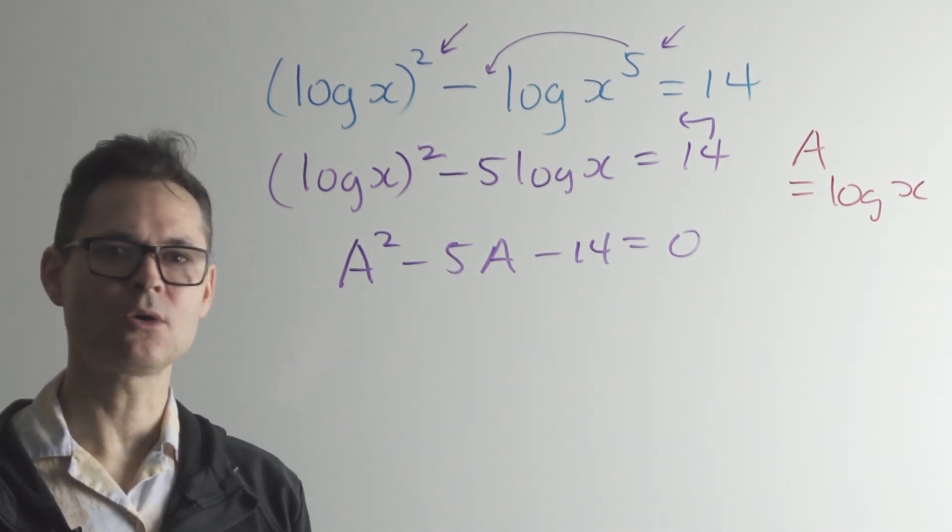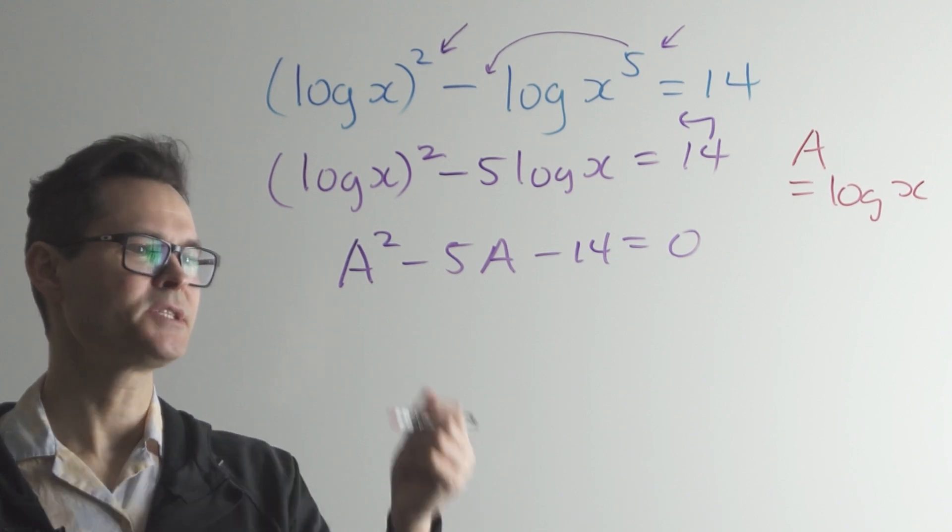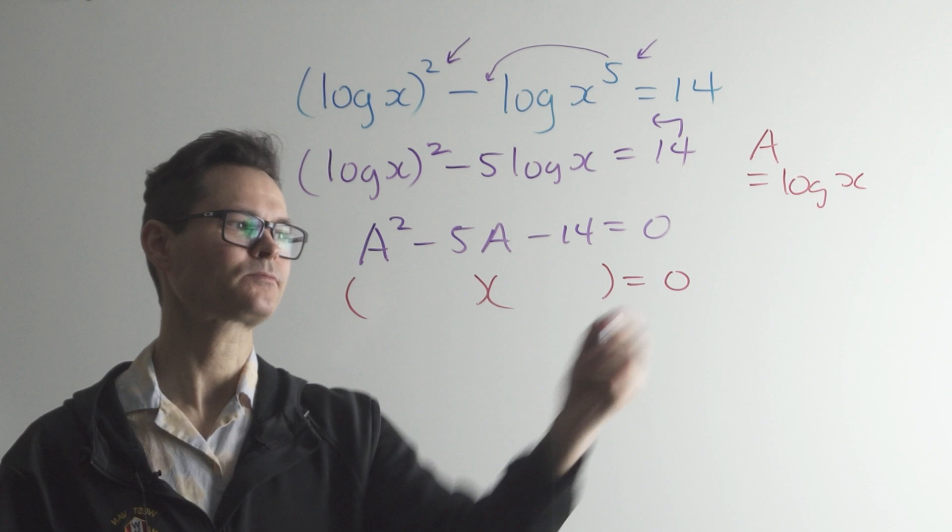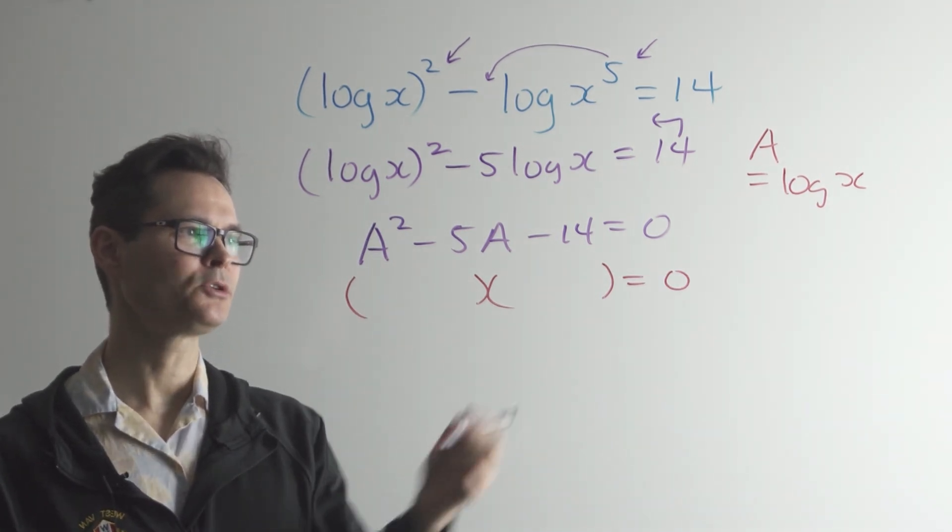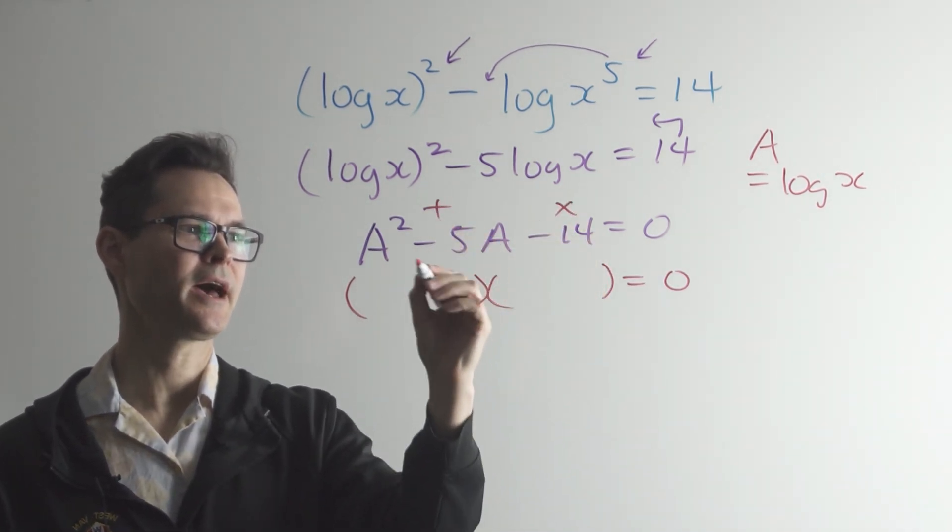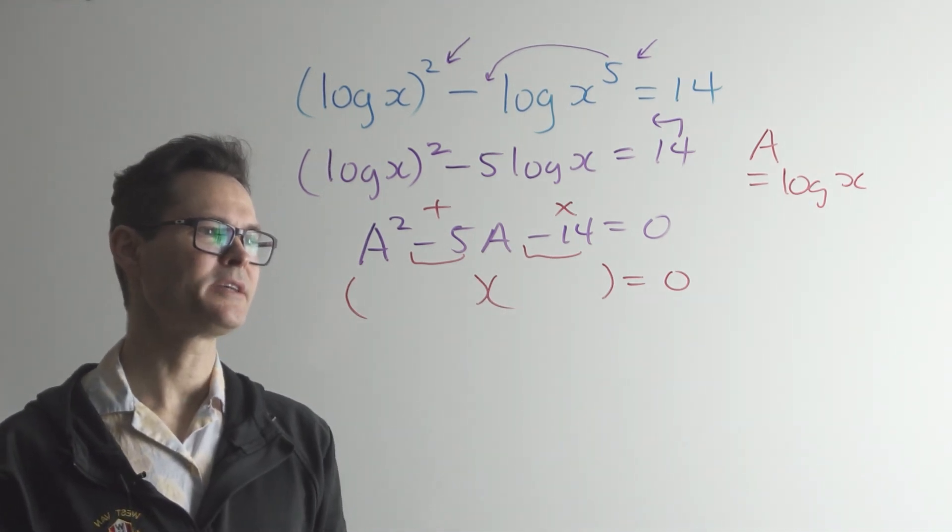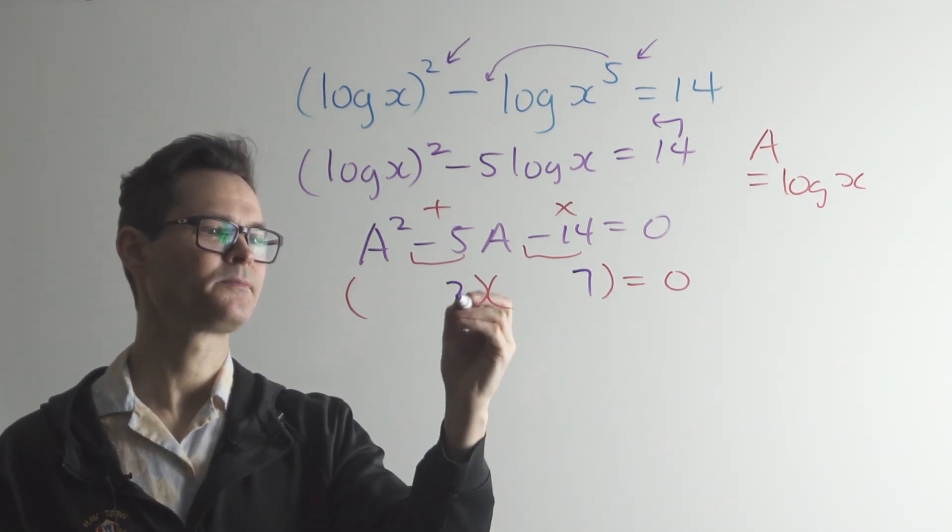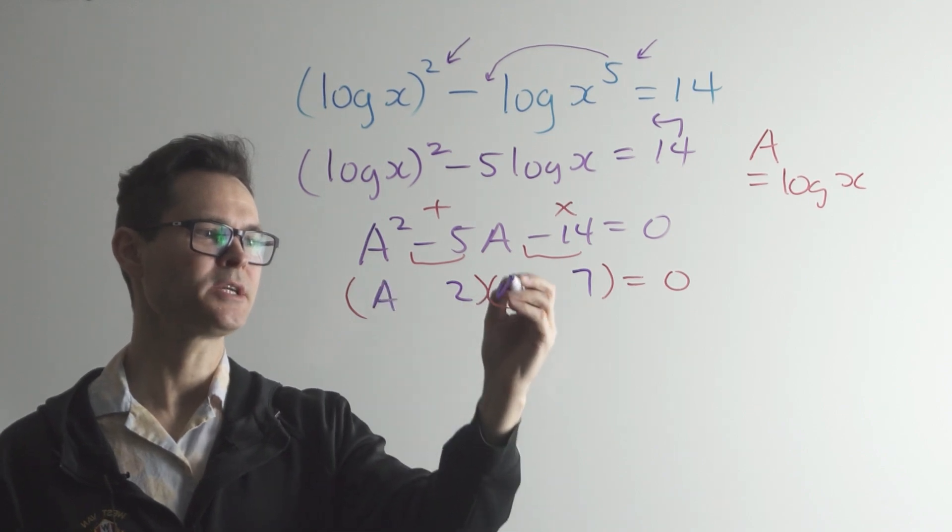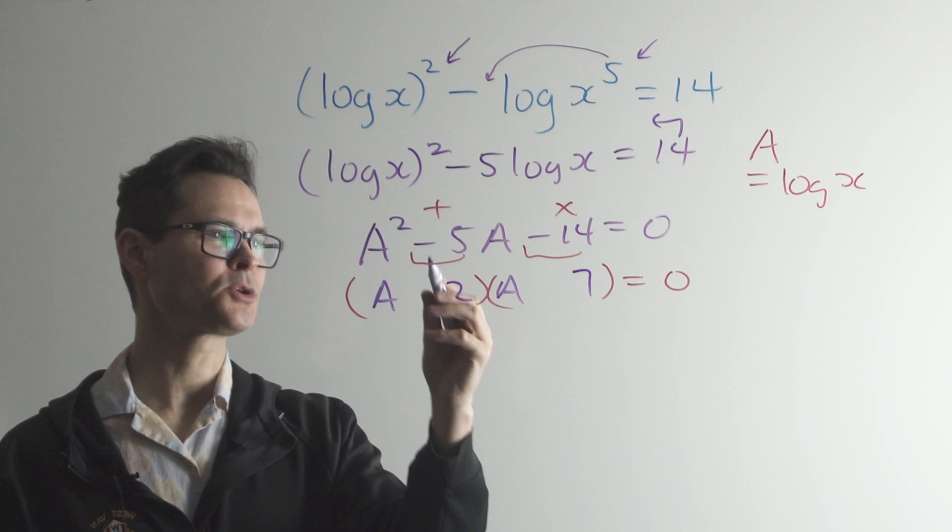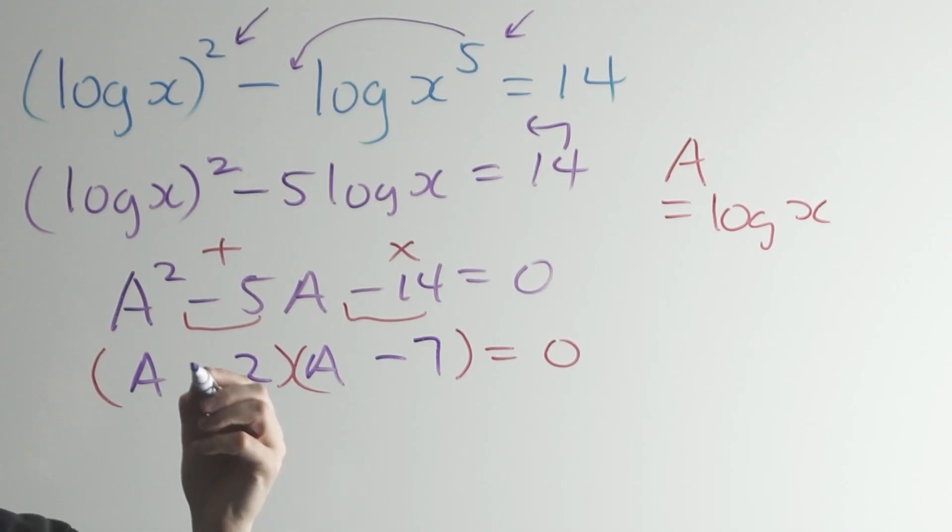You can either use the formula or factorization. I'm going to use factorization here because the numbers are pretty simple. So two numbers that multiply to give negative 14 and add to give negative 5. With a little bit of thought, you'll realize the answers are 7 and 2. Notice we're using the dummy variable A here. The middle sign is positive, sorry, negative. So I want the big number to be negative, positive. And we're almost done here.